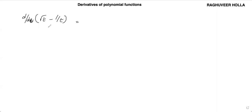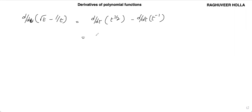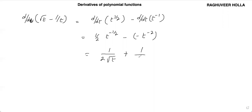Let us differentiate with respect to t: d by dt of root t minus 1 over t. This can be written as d by dt of t to the power of half, minus d by dt of t to the power of minus 1. This will be one half t to the power of minus half, minus minus t to the power of minus 2, or 1 by 2 root t plus 1 by t squared.